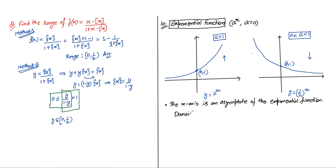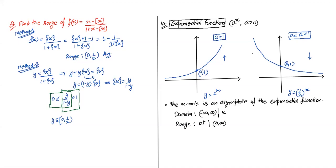A special case is e^x where e ≈ 2.718 (irrational). This is just one specific exponential function. For exponential inequalities: if Aˣ > Aʸ, then if A > 1, we get x > y directly; if 0 < A < 1, the inequality reverses: x < y. This is analogous to multiplying by positive vs. negative numbers in regular inequalities.